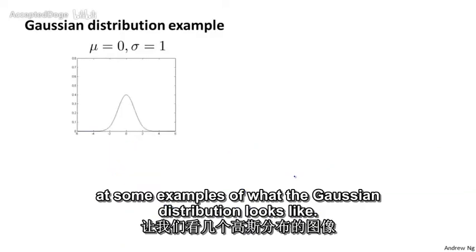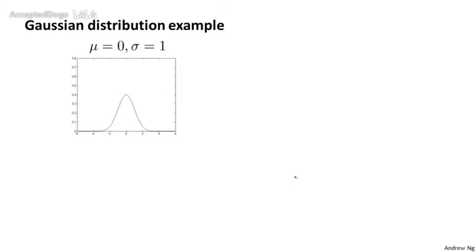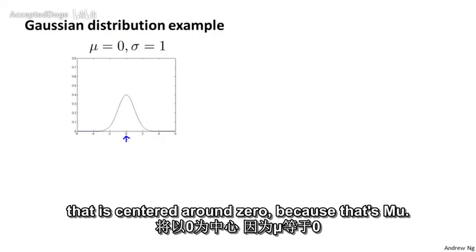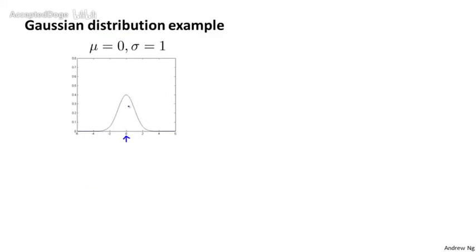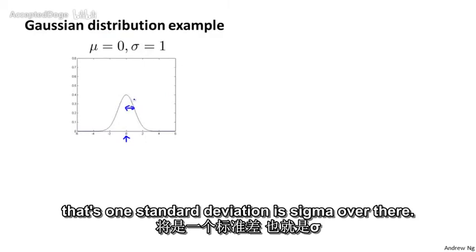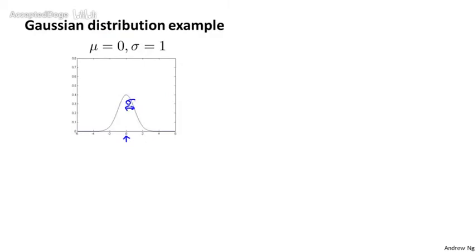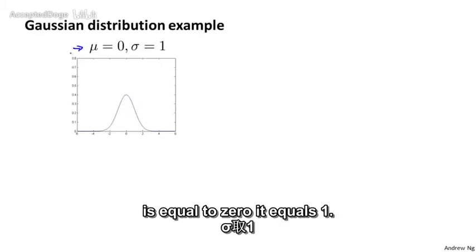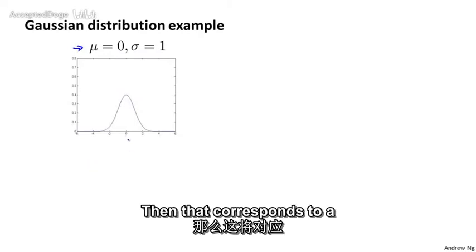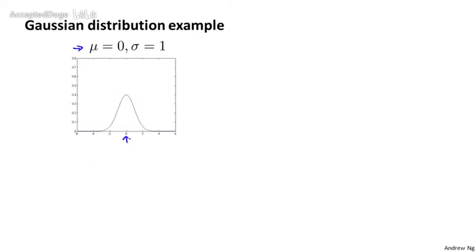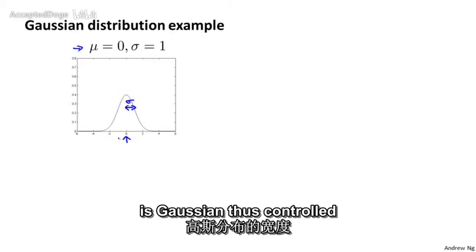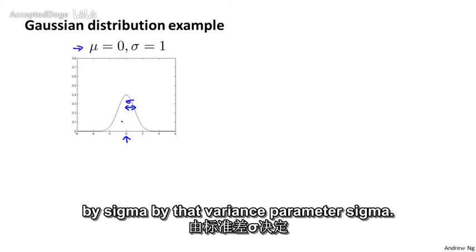Let's look at some examples of what the Gaussian distribution looks like. If mu equals zero and sigma equals one, then we have a Gaussian distribution centered around zero, and the width of this Gaussian — one standard deviation — is controlled by sigma.